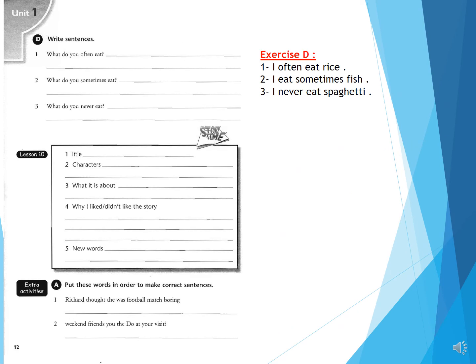Now we go to page 12 on your activity book. Exercise: Write sentences — كتابة جمل. What do you often eat? باستخدام ظروف تكرار. I often eat rice — على الأغلب أكل أرز.